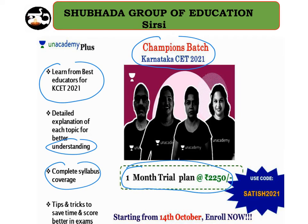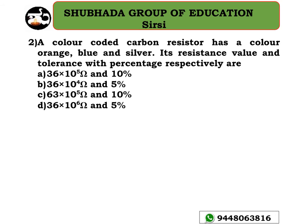The plan for Karnataka CET 2021 is a one-month trial plan at just rupees 2250 per month. If you use the code SATISH2021, you will get an extra 10% off on the course fee. Visit their website at unacademy.com or download their application from the Google Play Store for more information.